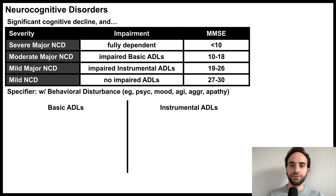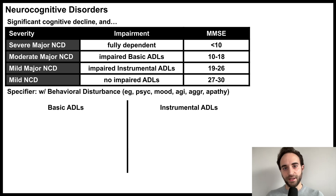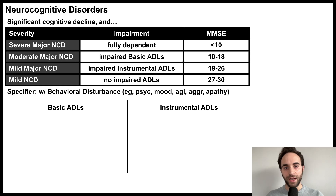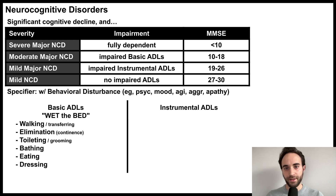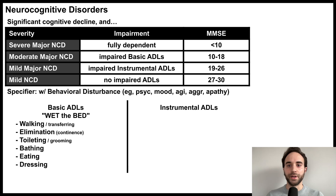Let's next review the activities of daily living, since they are critical to the diagnosis. Basic ADLs are basic self-care tasks, while instrumental ADLs are more advanced tasks required to maintain an independent home. Basic ADLs can be remembered with the mnemonic Wet the Bed: walking and transferring, elimination or urinary and fecal continence, toileting and grooming, bathing, eating, and dressing.